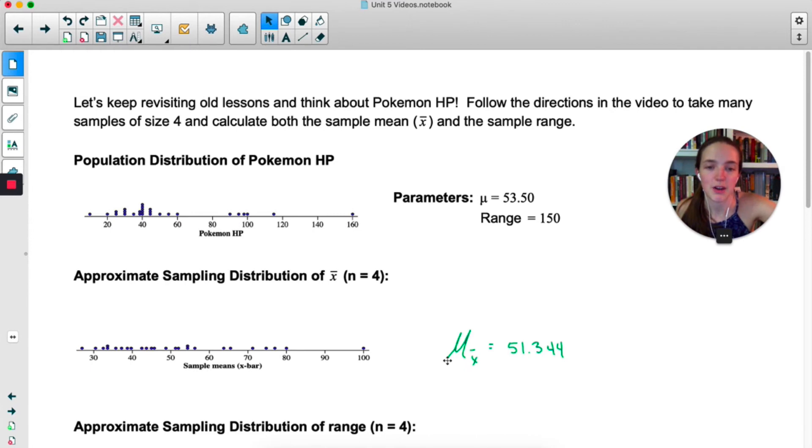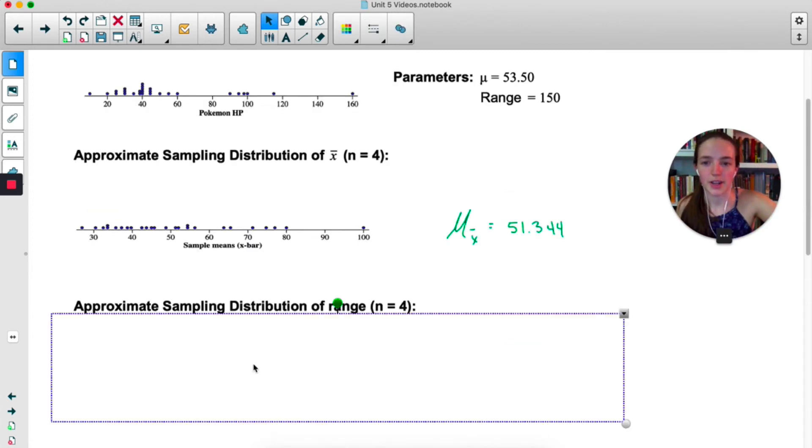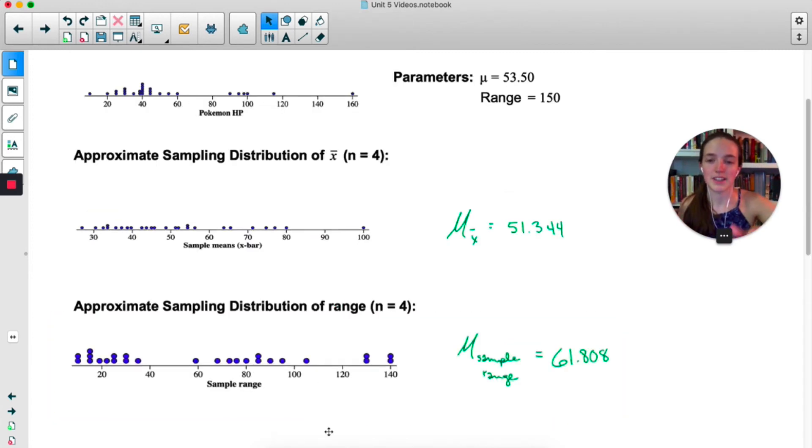Notice that I've now called this mu x-bar. This is the typical notation you use when you're talking about the mean of the sampling distribution of x-bar. That's a lot of words to say, so the symbol is really nice. This means the mean of the sampling distribution of x-bar. At the time of filming, this is what my sample range looked like, and the mean of the sampling distribution of the sample range was 61.808.